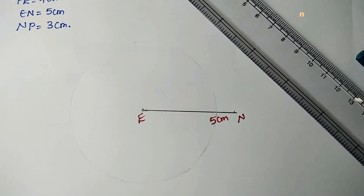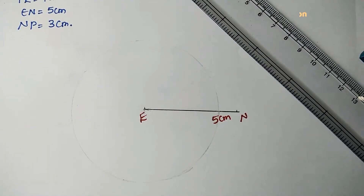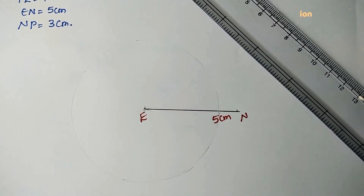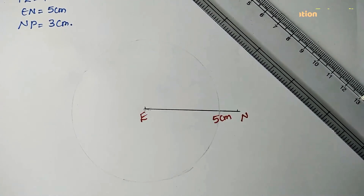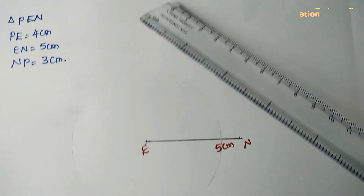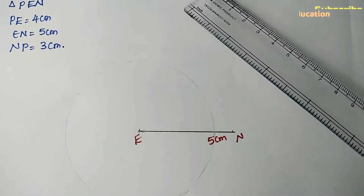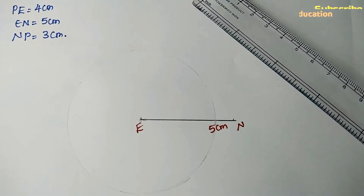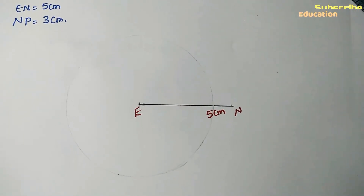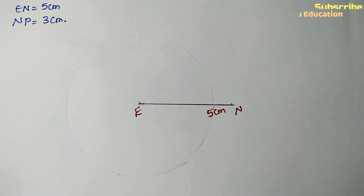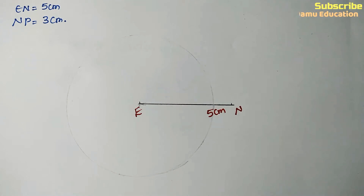Hello viewers. In this module we are going to discuss how to construct triangle PEN, where PE is equal to 4 centimeter, EN is equal to 5 centimeter, and NP is equal to 3 centimeter. First we draw EN with 5 centimeter, and we are going to draw PE 4 centimeter and NP 3 centimeter.